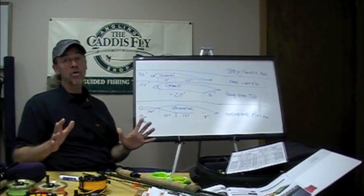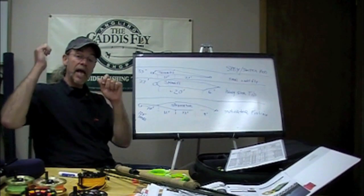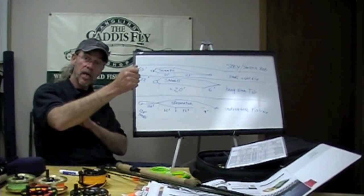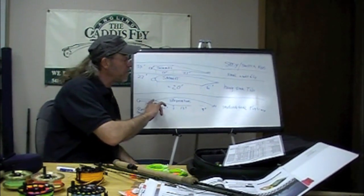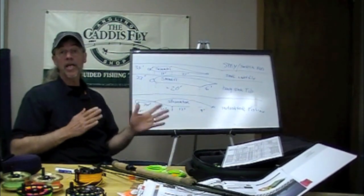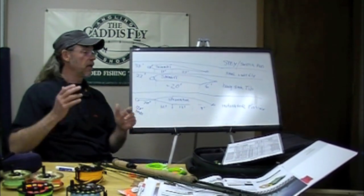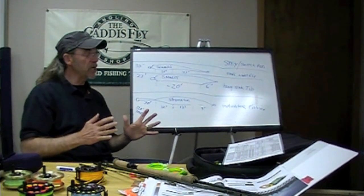You could cast an intermediate sink tip quite nicely. This casts overhead very nicely with an indicator or without. If you're out indicator fishing and want to switch over to swinging flies, it turns over and handles very nicely. It's a great line.